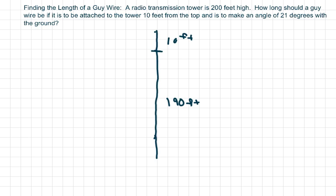So if this is our radio transmission tower, it's 200 feet high total and it's going to be attached 10 feet from the top. So 10 and 190 is your 200 feet here. We're going to attach it to the ground here and we want it to be 21 degrees. This is your wire.